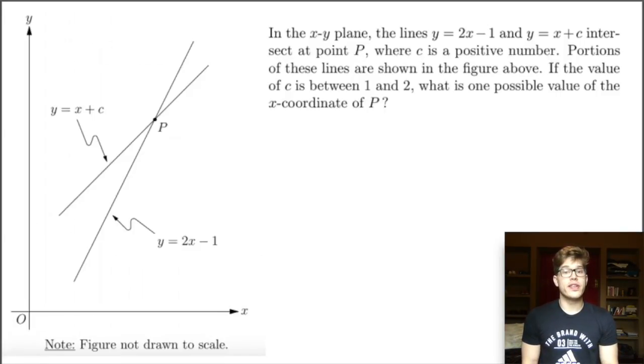Let's see this last problem. In the xy-plane, the lines y = 2x - 1 and y = x + c intersect at point p, where c is a positive number. Portions of these lines are shown in the figure above, or in this case to the left. If the value of c is between 1 and 2, what is one possible value of the x-coordinate of p? Okay, so we have two lines that intersect at point p. The way to find an intersection is to, of course, set our lines equal to each other.